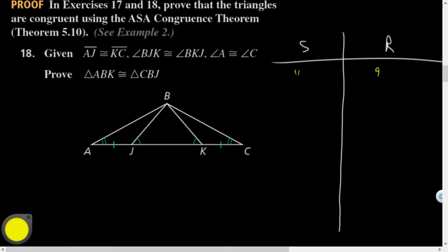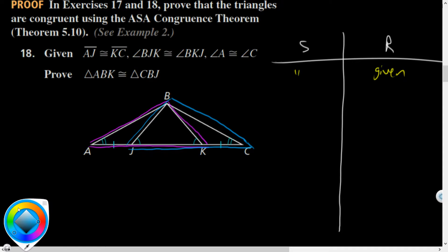Let's make sure all the given information is labeled. AJ is congruent to KC, angle BJK is congruent to angle BKJ, angle A and angle C are congruent. Which two triangles am I trying to prove? ABK and CBJ. I'm actually trying to prove these overlapping triangles are congruent to each other. So I've got a bunch of given information, but where can I go from here? JK is congruent to itself by reflexive.